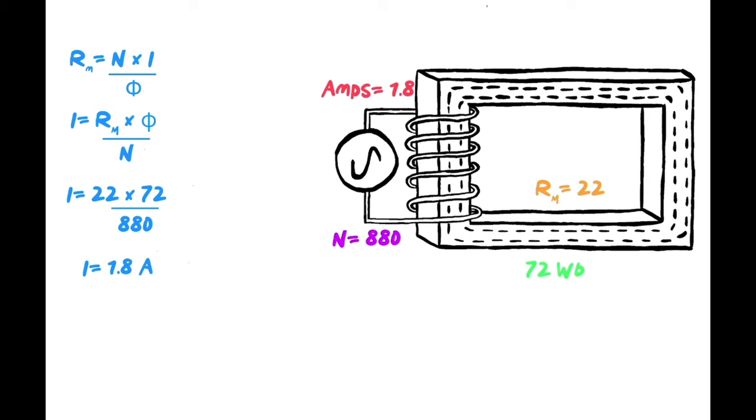And there you go, that is reluctance. Now when we're talking about that, remember that that 22 is just telling me how reluctant this core is to the setting up of flux lines. Not too crazy. Again, everybody makes magnetism out to be way more difficult than it needs to be.